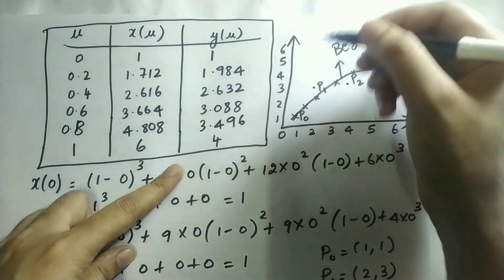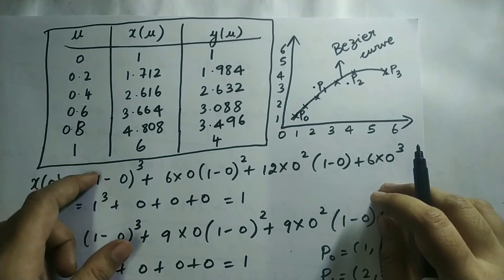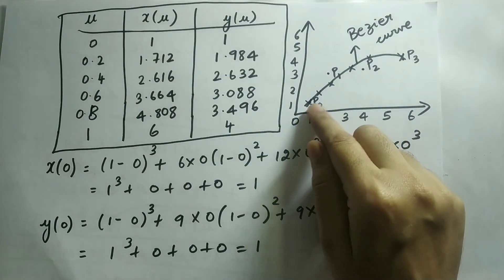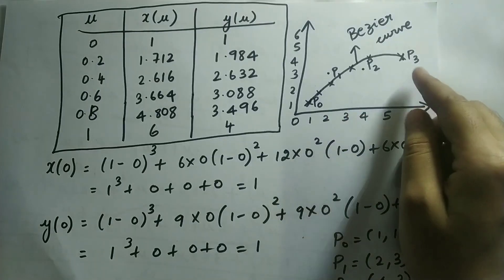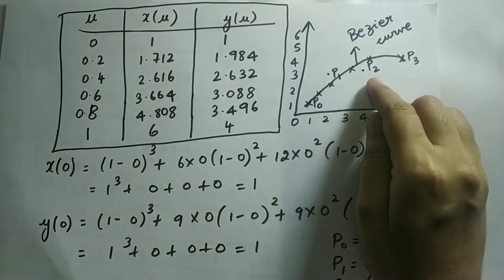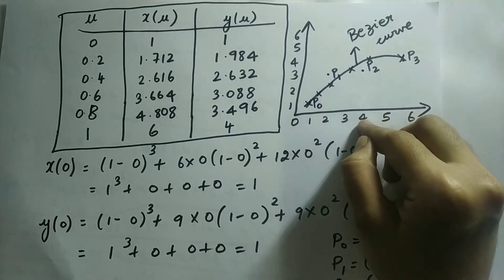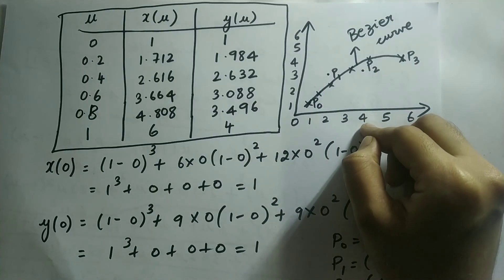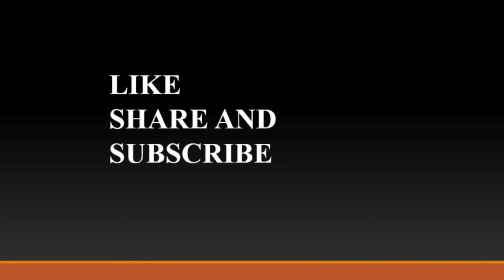In this way, we draw the graph for the given table. The start point P0 and end point P3 lie on the curve, whereas P1 and P2 do not lie on the curve — this is one key observation from the graph. The PPT for this Bezier curve example is attached in the description. Please like, subscribe, and share. Thank you.